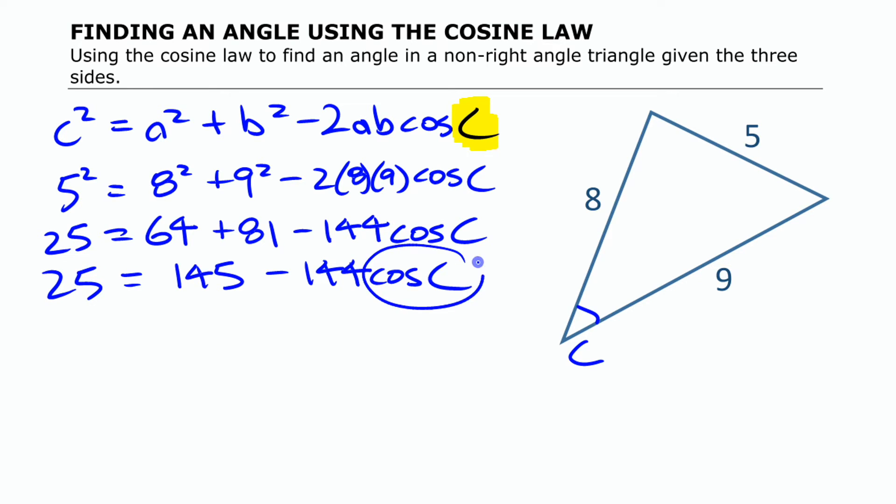Now if this is what we're isolating, we need to find a way to get that by itself. One thing you could do is subtract 145 on both sides, or you could add this on both sides or move to the other side and make it positive. Just to keep this simple here, what I'm going to do is subtract 145 on both sides.